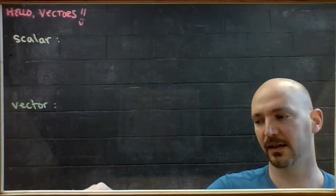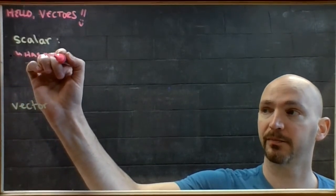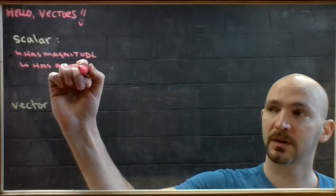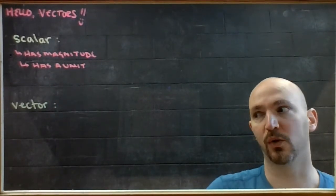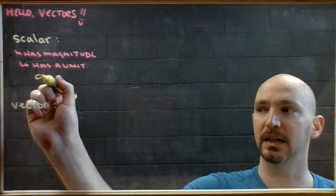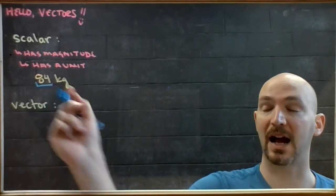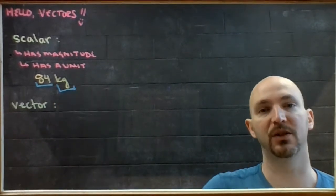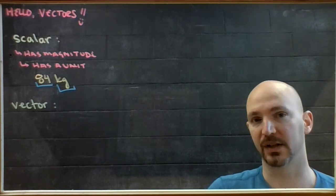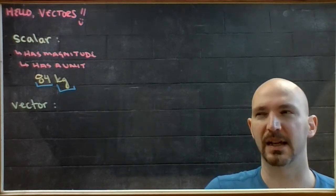A scalar is a type of number that has a size, or a magnitude, and a unit. For example, a mass of 84 kilograms — you can see the two pieces: the magnitude (how big it is) and the unit (what chunks you're counting). Things like the time it takes to get to work, the amount of money in your bank account, or weights — those are scalar values.